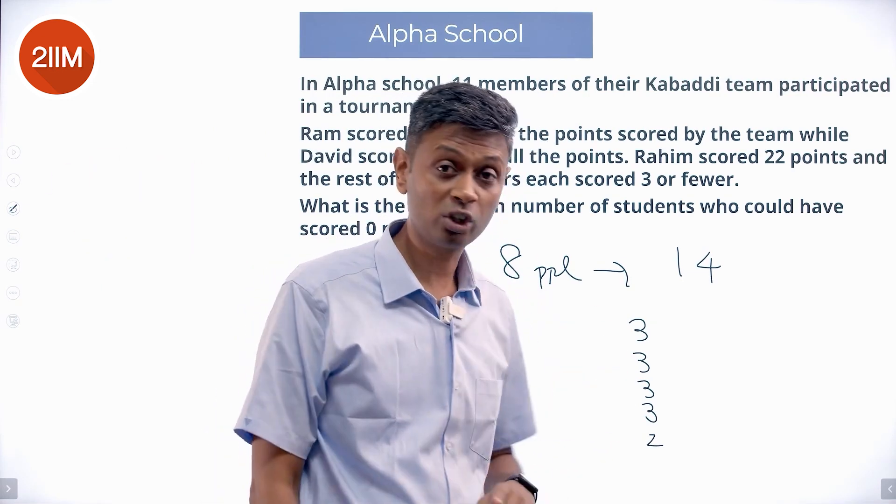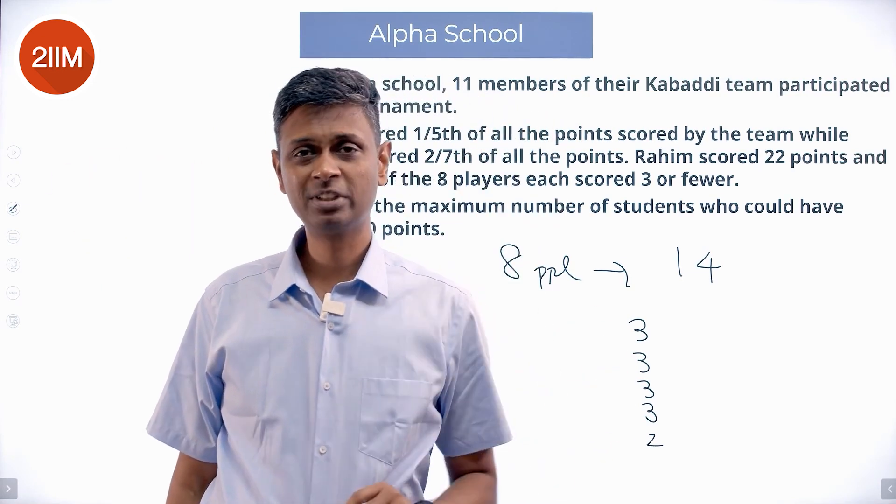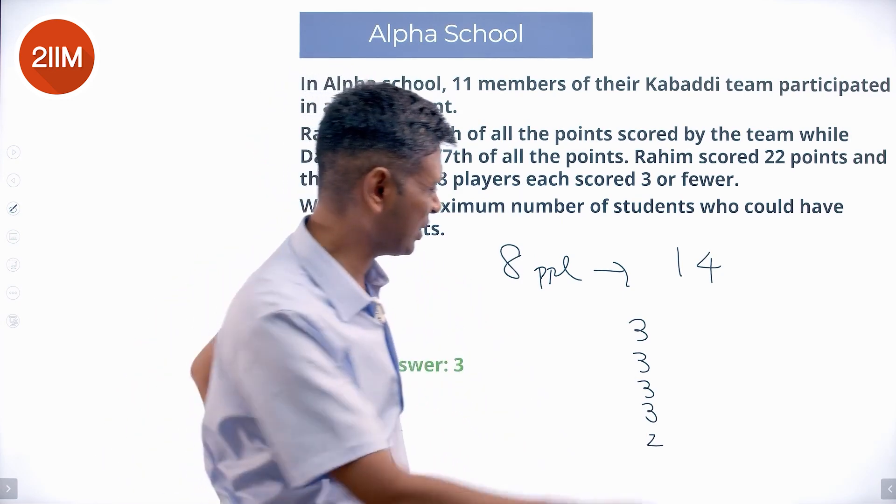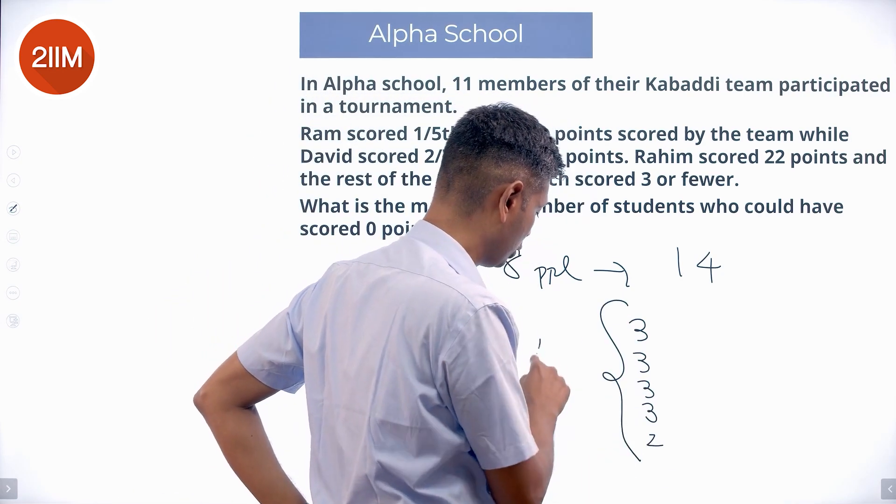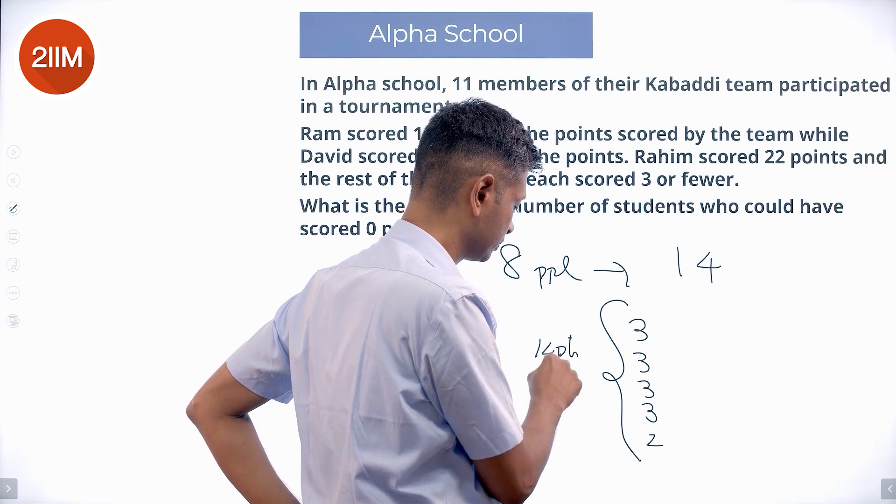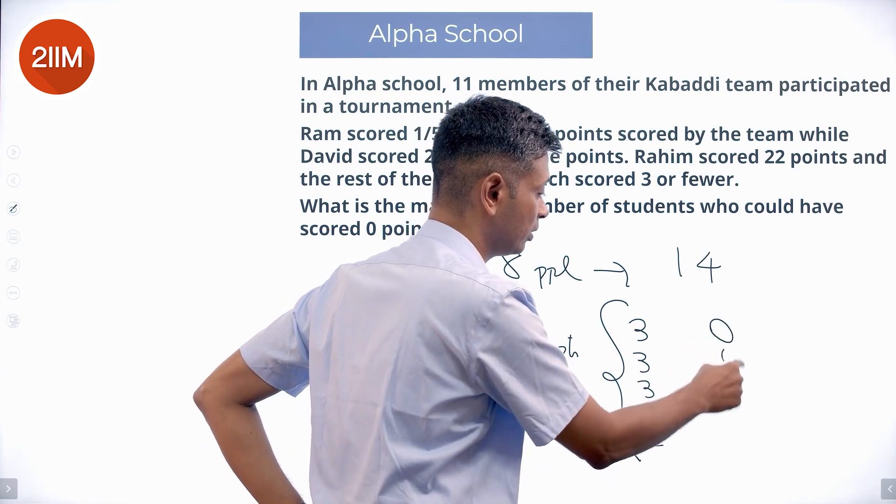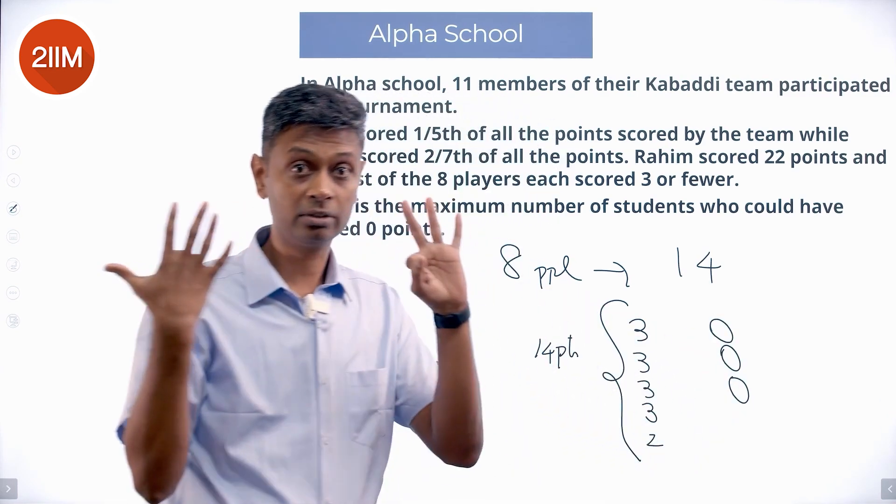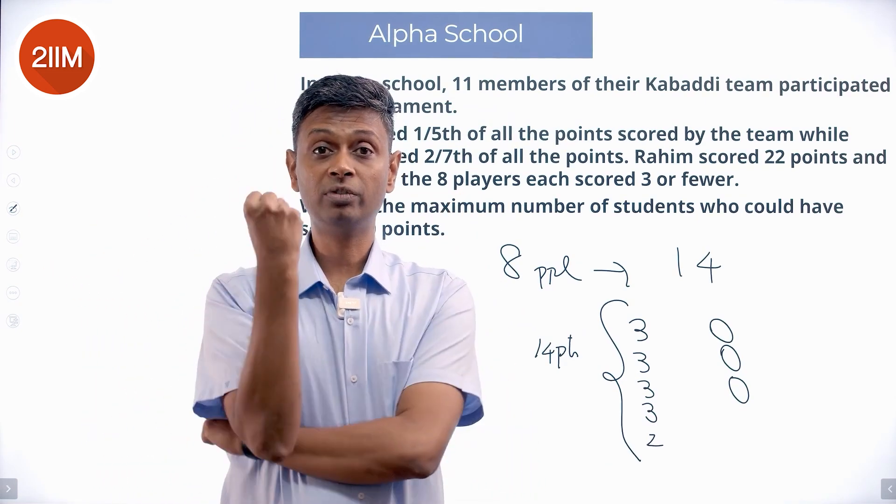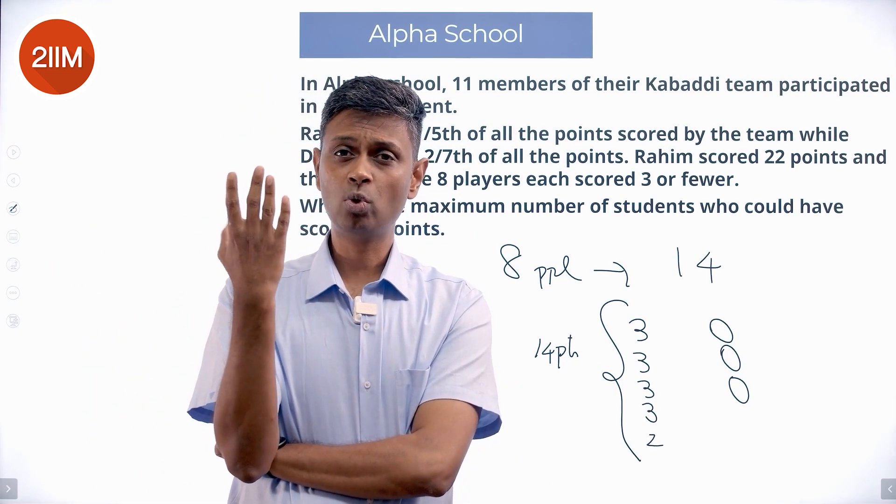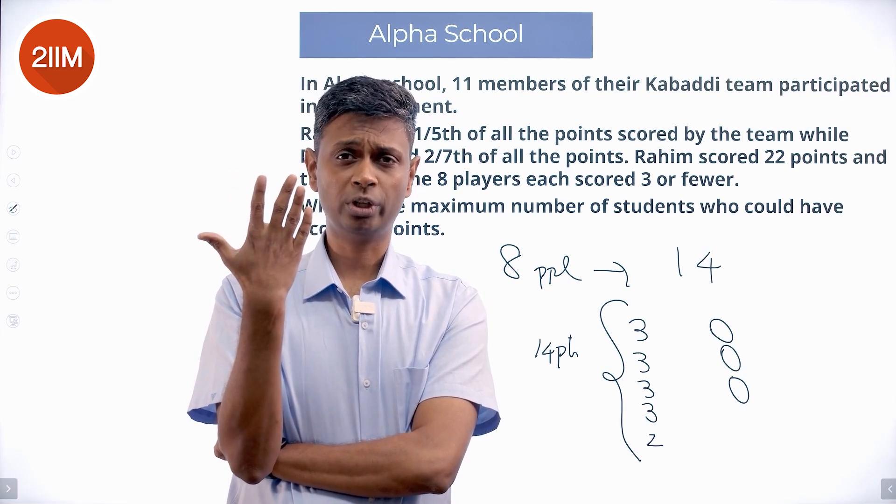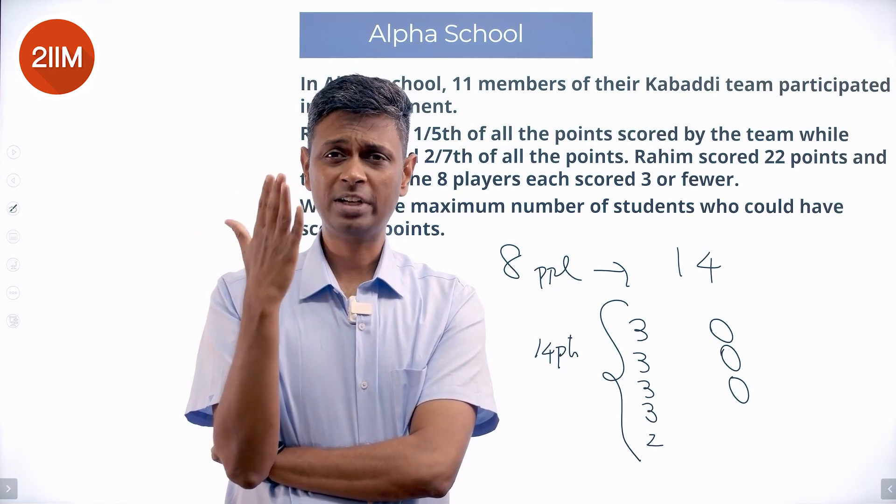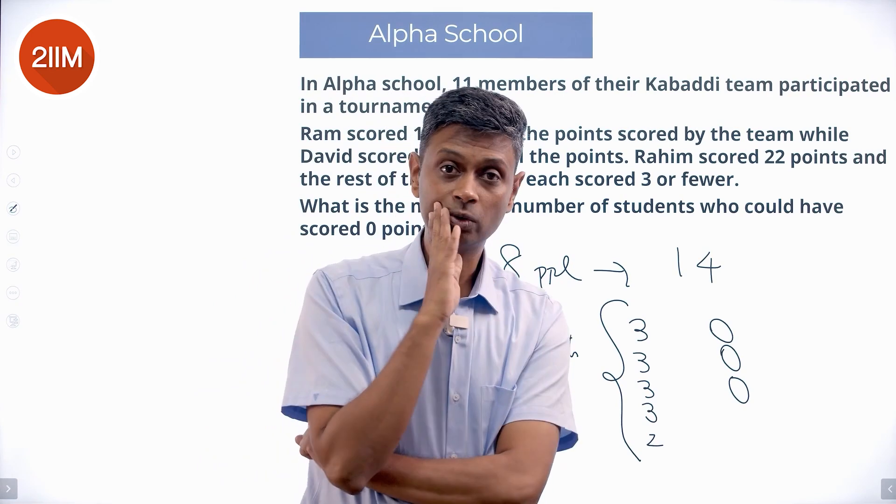Put the maximum possible points for as few guys as possible. Remaining all get 0. 3 plus 3 plus 3 plus 3 is 12. 4 guys get 3 each. Fifth guy gets 2. Best case scenario to get to 14 points. In which case, the last 3 got 0, 0, 0. 8 people should be there. Of which we are assuming the 5 of them bring all the points. 4 guys get 3, 1 guy gets 2. 14 points get accounted for.